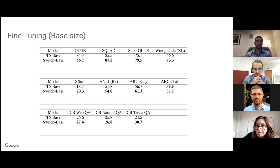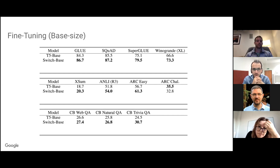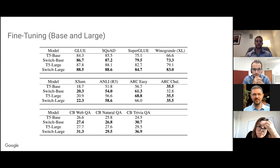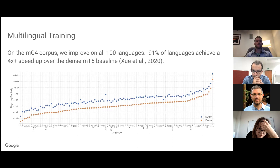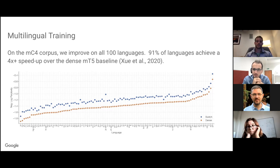We studied fine-tuning of sparse versus dense models on 11 different tasks including reasoning, question answering, and summarization, at both base and large model scales. At a high level, sparse models improve over dense models in virtually all fine-tuning tasks, besides two ARC challenges. We also studied multilingual training, where experts could potentially specialize across languages. We got good speedups but worse than in the monolingual case — only a 4x speedup in multilingual versus 7x for monolingual English.